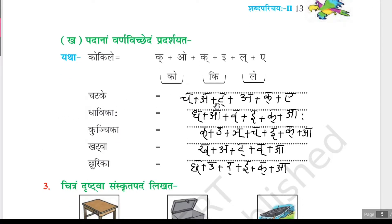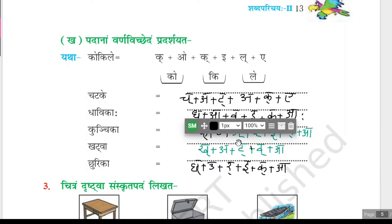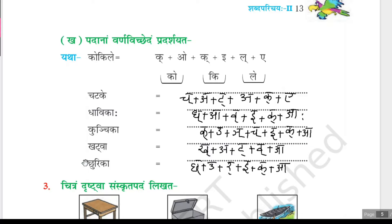Likewise for chattakke: ichk plus aa plus ichk plus aa plus ikk plus ee gives chattakke. Dhavikaha: iddhu plus aa plus ibhu plus ee plus ikk plus aha gives dhavikaha. Kunchika: ikk plus aa, ikk plus aa, ikk plus aa, that's it plus ibhu plus aa. And chattakke: ichk plus u plus iri plus ee plus ikk plus aa.